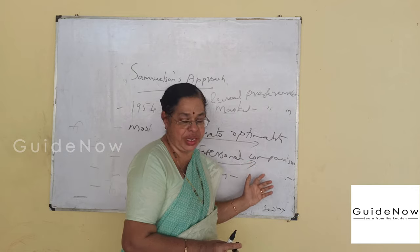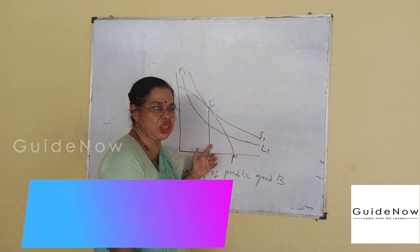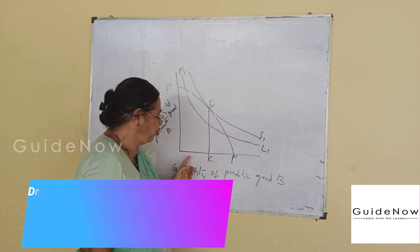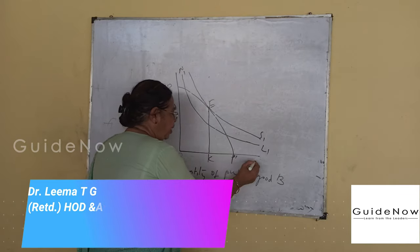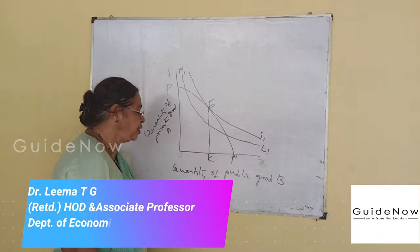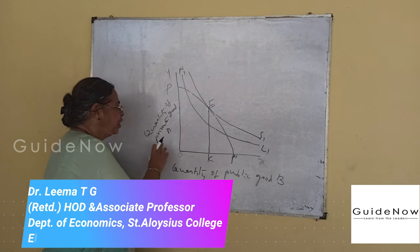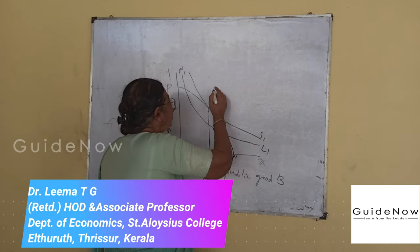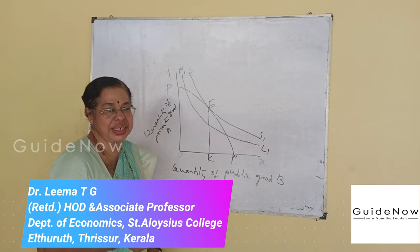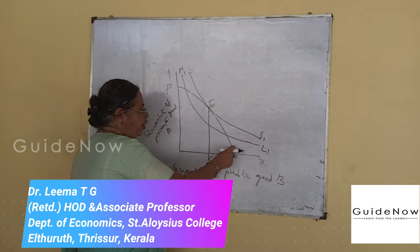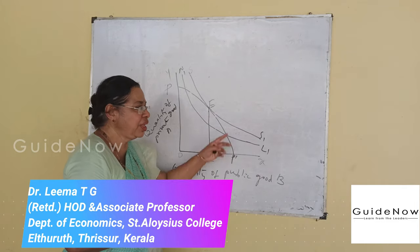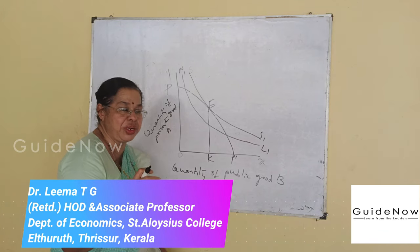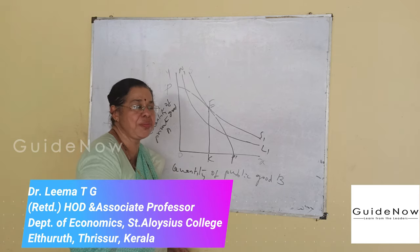This efficiency in the allocation of public goods is explained with the help of a figure. The OX axis represents the quantity of public goods B, and the OY axis represents the quantity of private goods A. There are two indifference curves: N1L1 and S1. PP1 represents the production possibility curve.